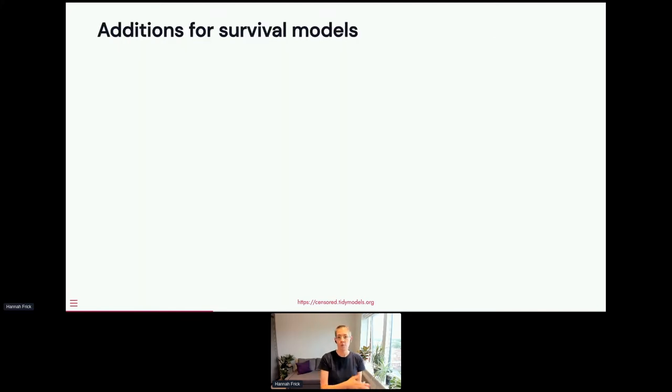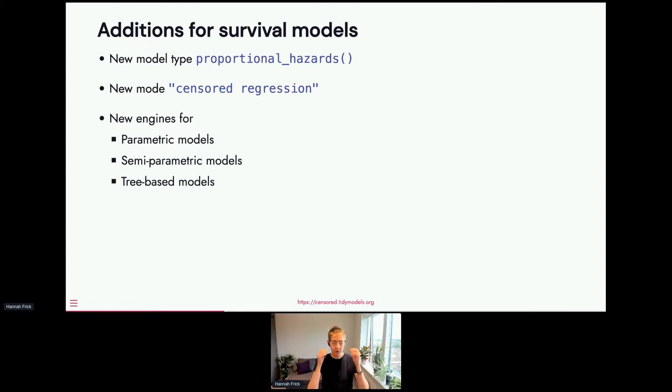And these three elements are what makes a parsnip model specification and you will encounter these in censored as well. So if you already know that pattern, that will be very familiar. So what's different or what were the additions that we made for survival models? For one, we have a new model type for proportional hazards models. And a new mode for censored regression to distinguish that from quote-unquote regular regression problems. And the third part, you may guess it, were new engines. So for existing models, but for that new mode. And they cover parametric models, semi-parametric models and tree-based models. And the last bit to mention in the specification realm is that we have a formula interface for all the models that allows you to specify stratification where it makes sense.